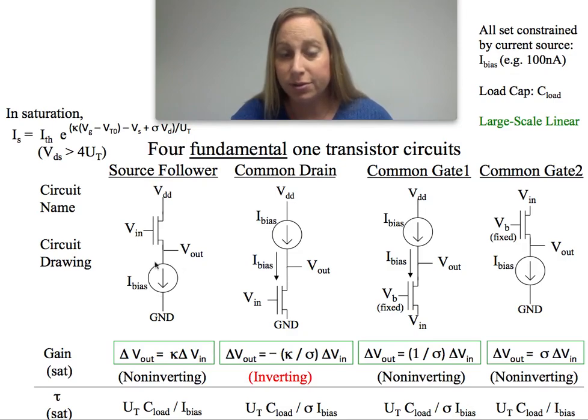You have a current source just like this, which is really going to be another transistor. And we kind of know how to look at this. So why is this kind of a topology interesting? Well, I'm going to have cases of voltage input and voltage output. Very straightforward.